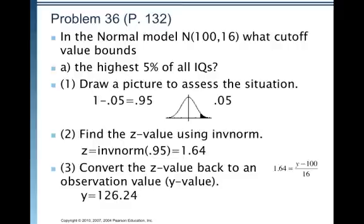We're going to convert the Z value back to an observation value, a Y value. Remember, it's Z equals Y minus the mean over the standard deviation. So, plug in your specific Z value. So, 1.64 equals Y minus 100 over 16. And then you just solve for Y. So, you're going to multiply both sides by 16. 1.64 times 16 is 26.24 and that equals Y minus 100. So, now you're going to add 100 to both sides and you get Y equals 126.24. And that's your answer. So, the highest 5% of all IQs, the lowest value that gets in that top 5% is 126.24.